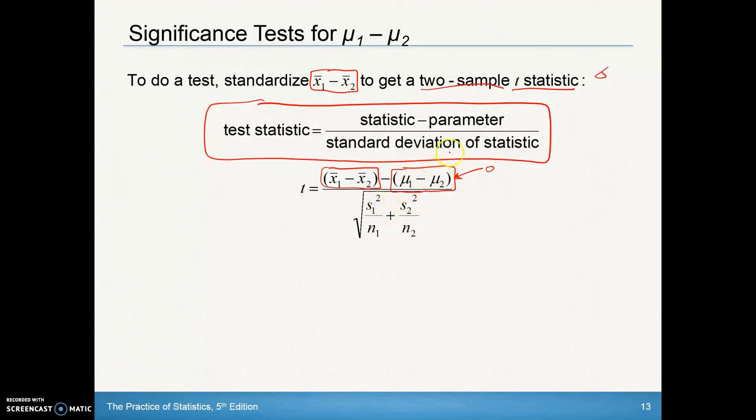Notice in our standard deviation we use the sample data rather than population data. The sample variance is added together because we can't add standard deviations, so we'll add those sample variances together and then square root.